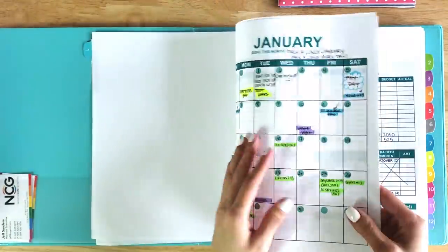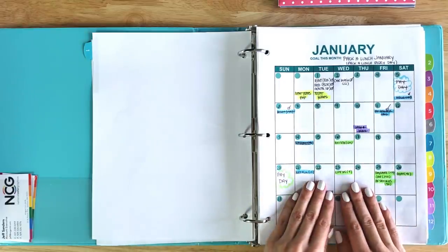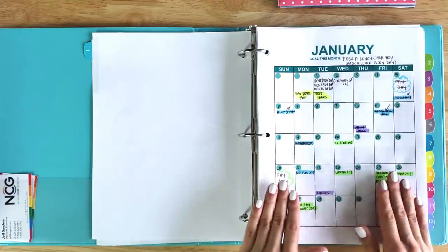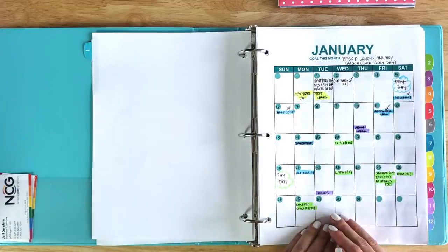My budget really starts with the calendar method. This is my budget calendar. It literally tells me everything that I need to include in my budget for the month that I'm working in. We're working in January.